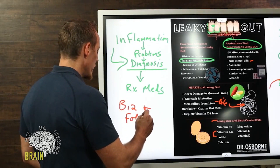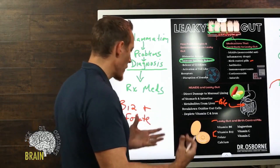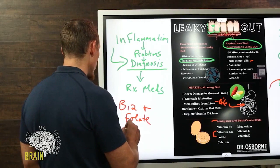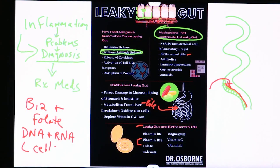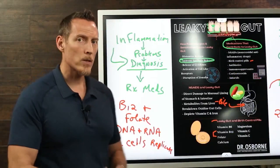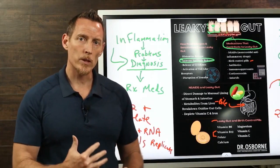Two nutrients I want to point out are vitamin B12 and folate. B12 and folate play a major role in the GI tract lining's healing and repair. B12 and folate are necessary for DNA and RNA replication — in a nutshell, for cells to replicate and make new cells, you must have adequate B12 and folate. The cells in your small intestine turn over every two days, so they are rapidly reproducing.